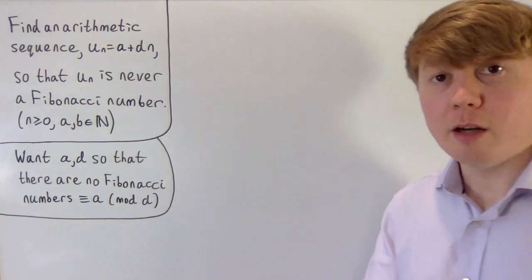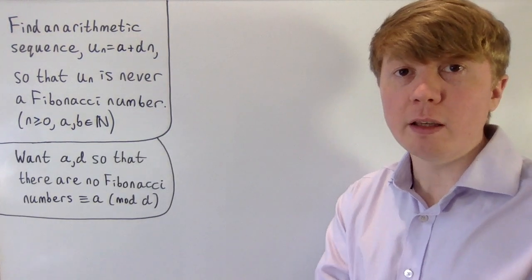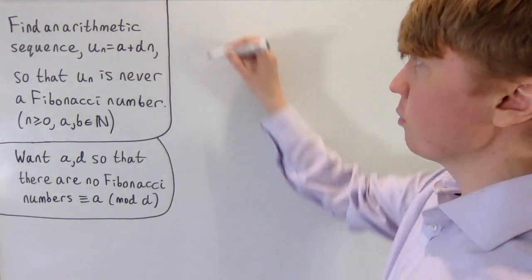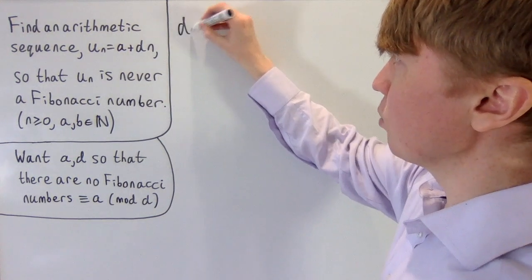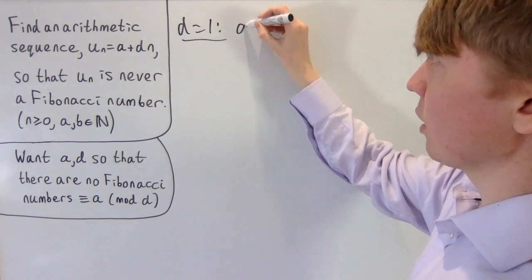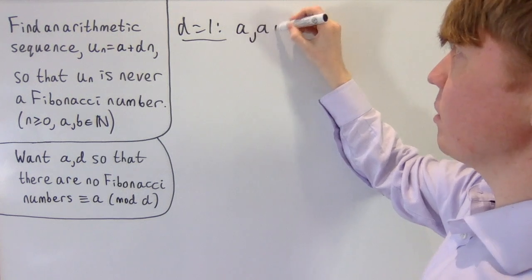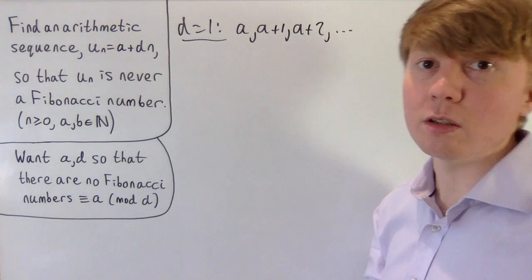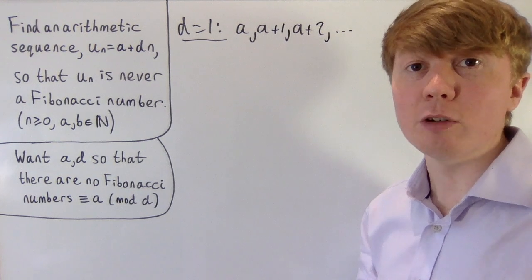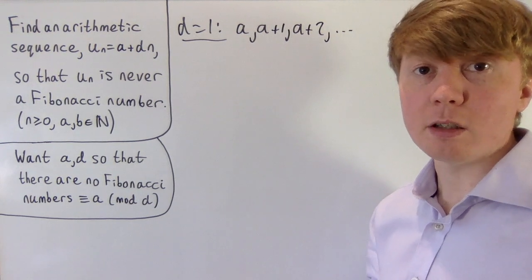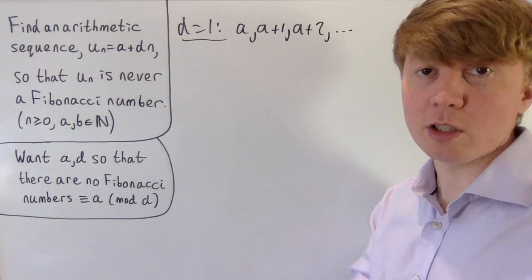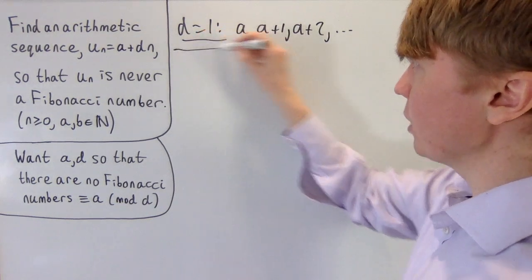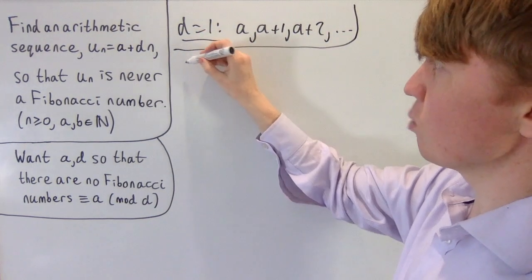We'll explore this by trying different values of d. For d equals 1, our sequence would just be a, a plus 1, a plus 2, and so on — all positive integers greater than or equal to a. Clearly this overlaps with infinitely many Fibonacci numbers, so d equals 1 doesn't work.